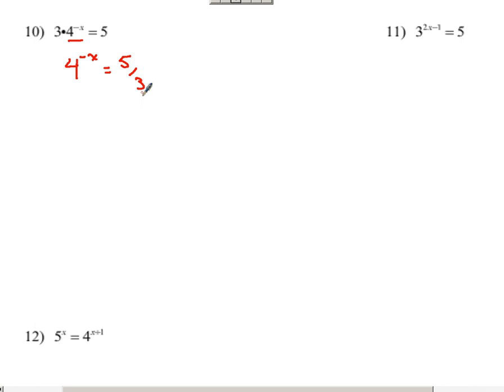All right, so we saw how this worked out on the last one. With the x being stuck up here, if we apply a logarithm to each side, we can bring that x down. So if I apply log base 10 to both sides, it'd be log of four to the negative x equals log of five-thirds. So we bring that negative x down to the front.